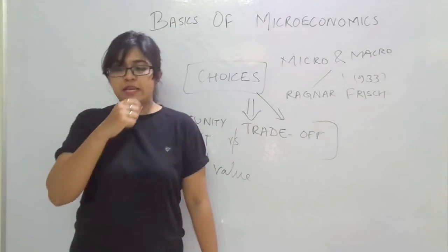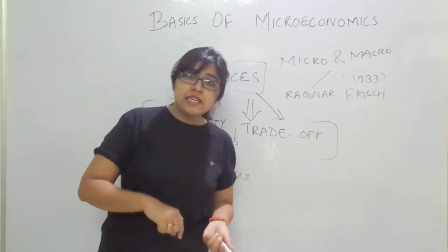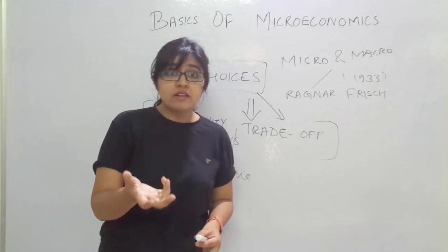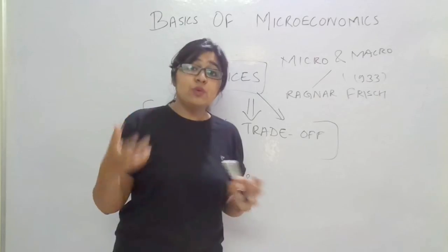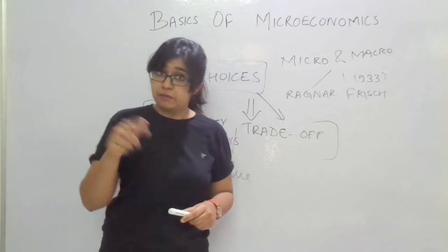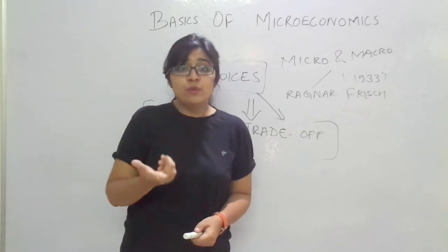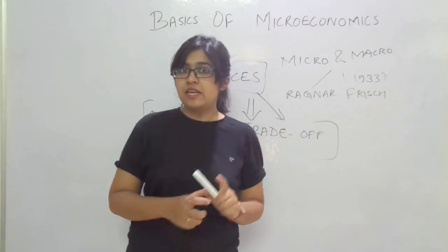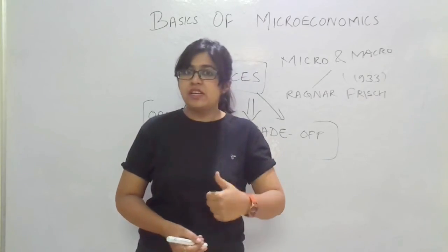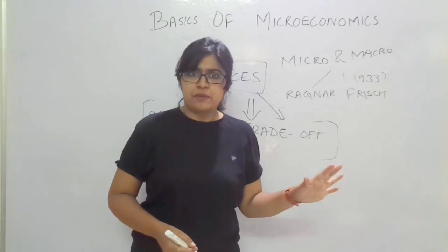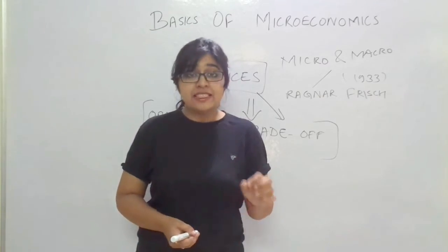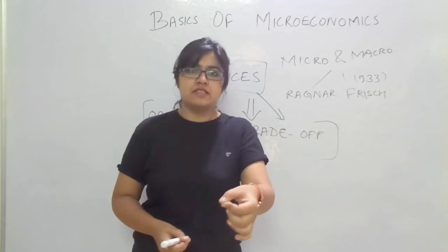Two more concepts to mention here are need and want, because when we study microeconomics further we will study the law of demand, and the word demand is quite commonly used. We need to know its correct meaning, along with other words used synonymously. Need is the basic necessity that humans must fulfill — for example, food, shelter, and clothing. These are the common basic needs that fulfill the basic necessities of humankind.